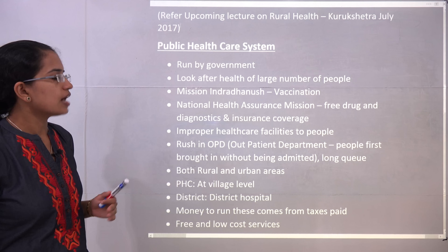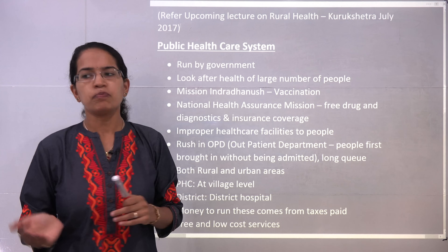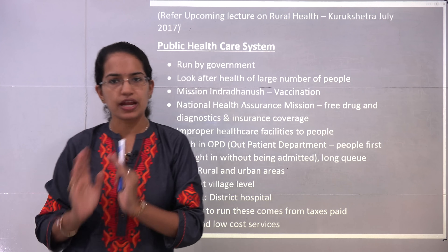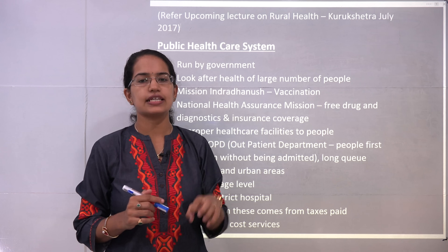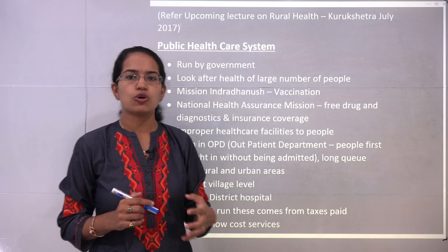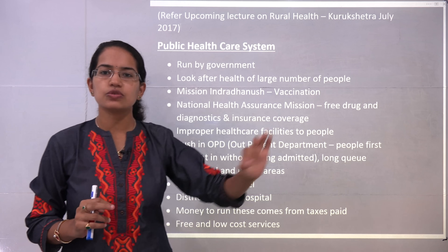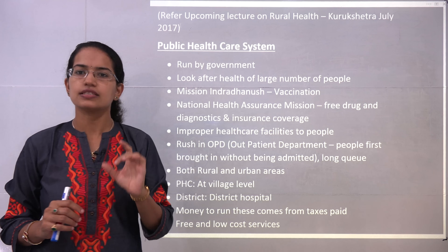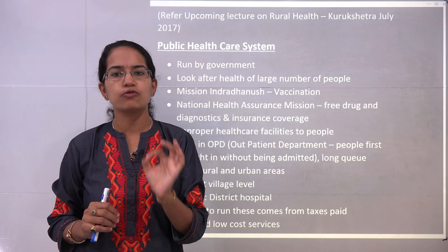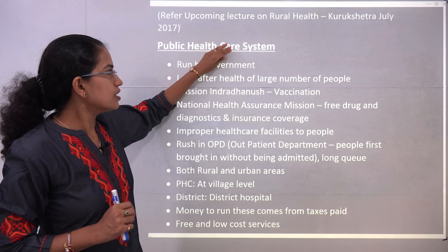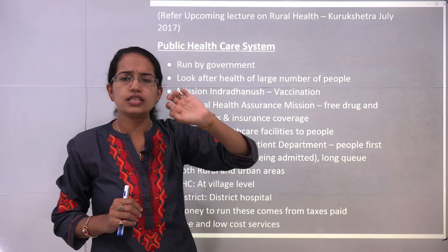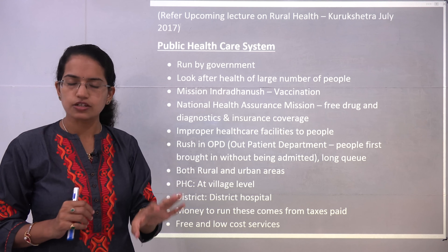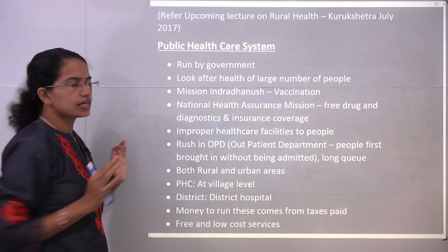When we talk about the distribution of the healthcare system, two systems exist in parallel: public healthcare and private healthcare. Public healthcare is provided by the government. It would be available even in the remotest part of India. In rural areas you would have at least a PHC — a primary health centre — with a doctor giving basic recommendations. In district regions you would have a district hospital. All this is looked after by the public healthcare system.